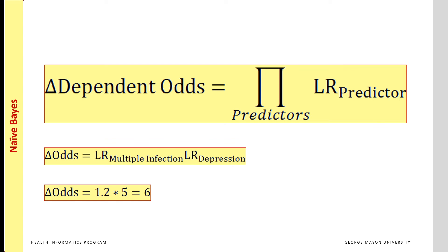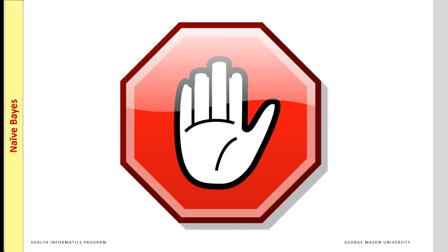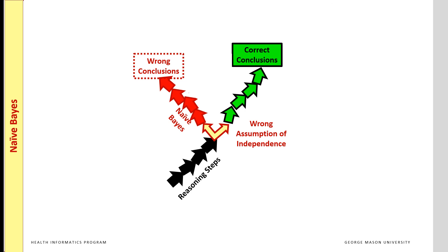Earlier in this lecture, we calculated the likelihood ratio associated with multiple infections as 1.2. If we also calculated the likelihood ratio associated with depression as 5, then the Naive Bayes analysis allows us to estimate the odds of substance abuse as the product of these two likelihood ratios. However, while the Bayes' formula allows examination of the combined effects of multiple predictors, there is a catch: we can use the simplified Bayes product rule only when the predictors are independent of each other. When several predictors co-occur, the assumption of independence is clearly violated — and predictors often do co-occur. In these situations, the odds form of the Bayes' formula is no longer an accurate model.